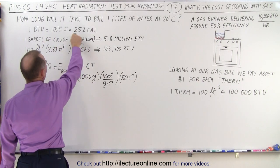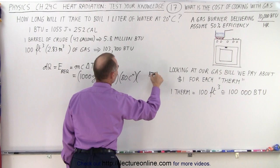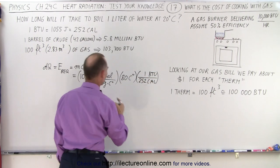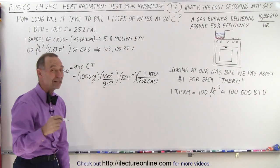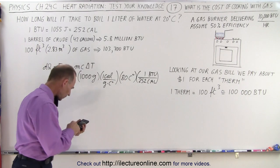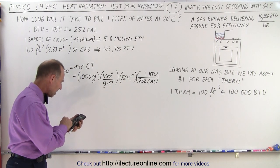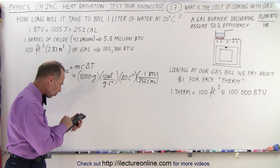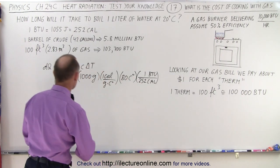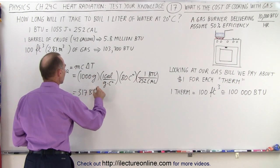We don't want calories, we want BTUs. So we have to convert that to BTUs. Here's a conversion factor. So that means we need BTUs at the top, calories at the bottom, 1 BTU, 252 calories. So that tells us how many BTUs we need to boil that water. So 1,000 times 80 divided by 252, and that gives us 317 BTUs.